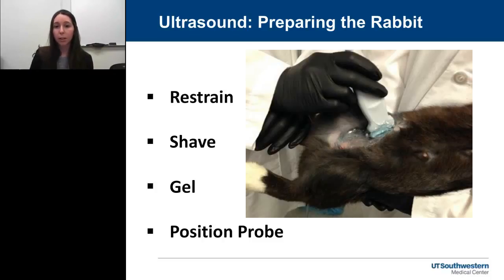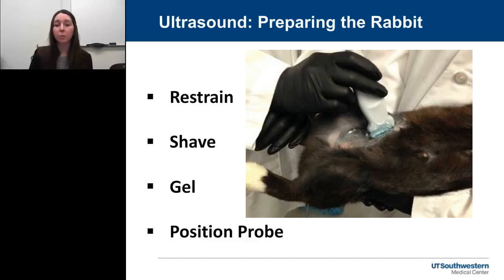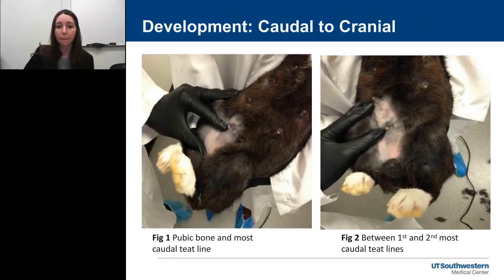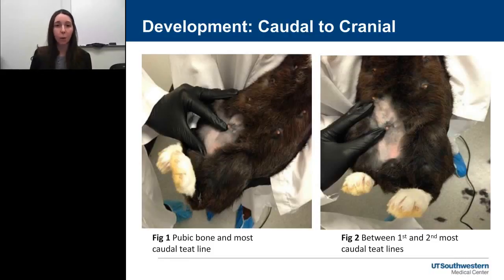For using ultrasound in rabbits: restrain the rabbit in dorsal recumbency — like a football hold with the belly up, head tucked under the restrainer's arm. Shave a small area, apply ultrasound gel, and position the probe in a sagittal orientation, parallel with the teat line. Development starts more caudally and moves cranially. For early pregnancy determination at around one week, use the pubic bone and the most caudal teat line as your area of interest. For evaluating fetal development later in gestation, use the first and second most caudal teats as your point of interest.